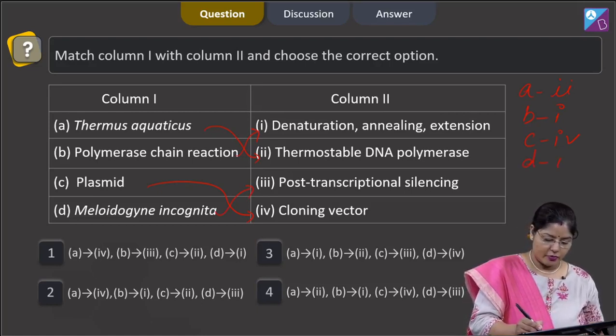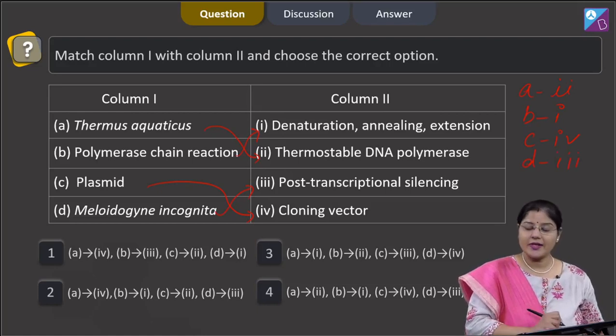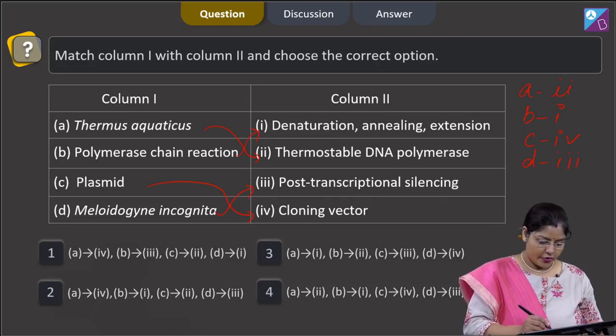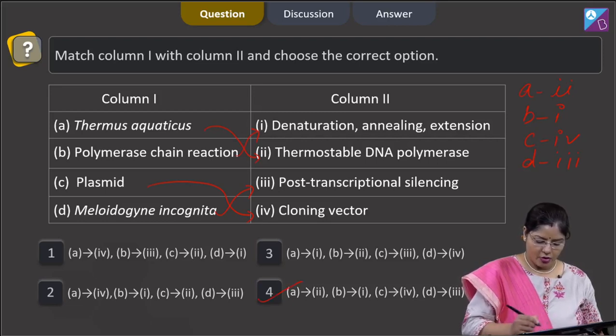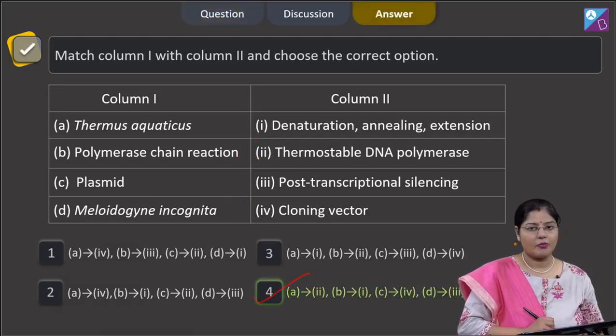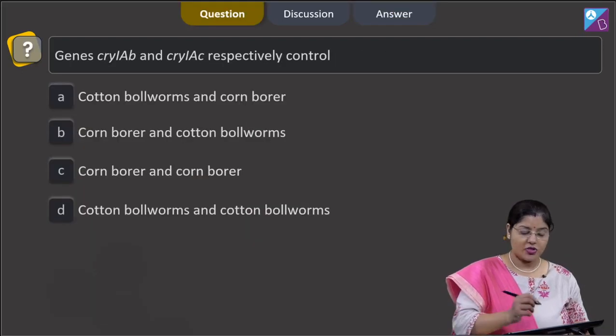D, Meloidogyne incognita, it matches with 3, that is post-transcriptional silencing. So D matches with 3. Let us see, this combination is given in which option: A with 2, B with 1, C with 4, and D with 3. This is given in option number 4. So the correct answer to this question is option 4.